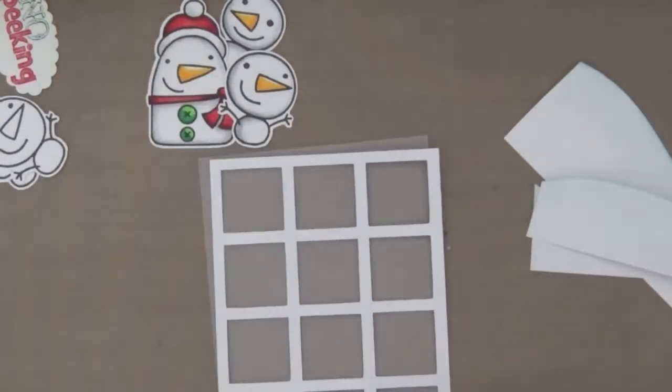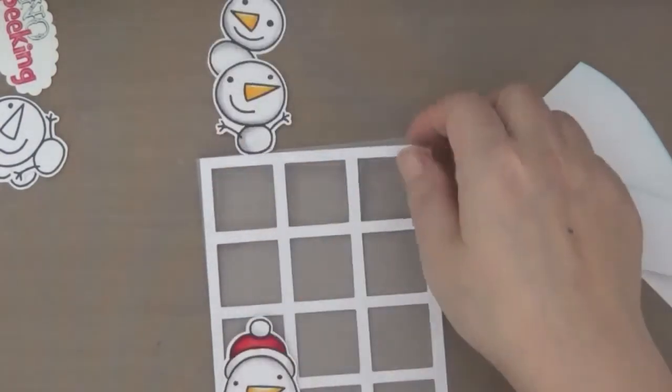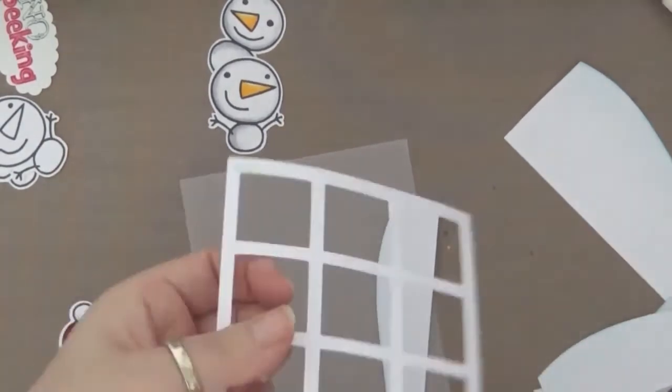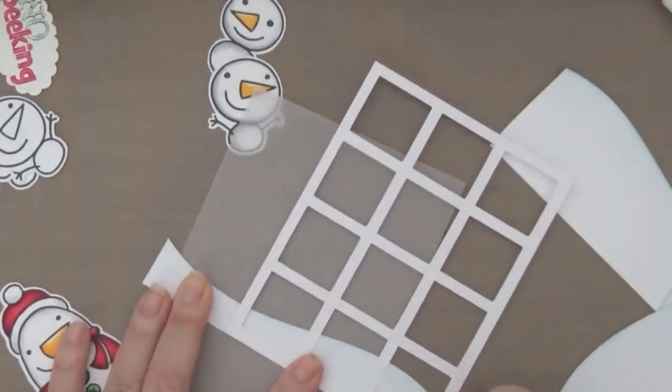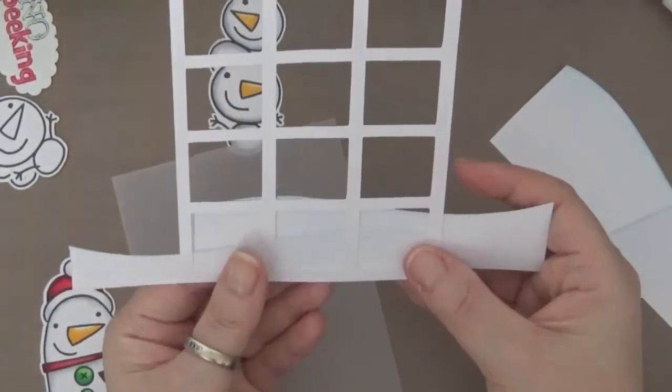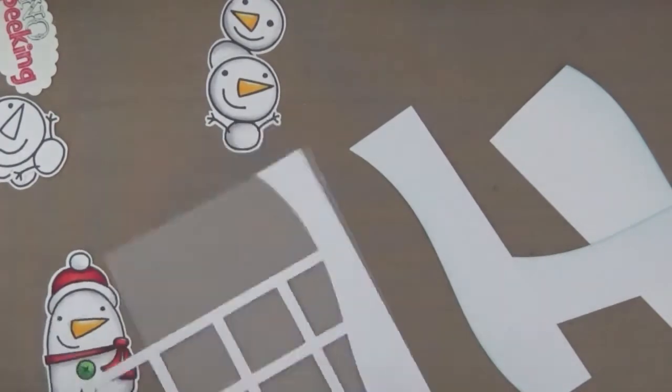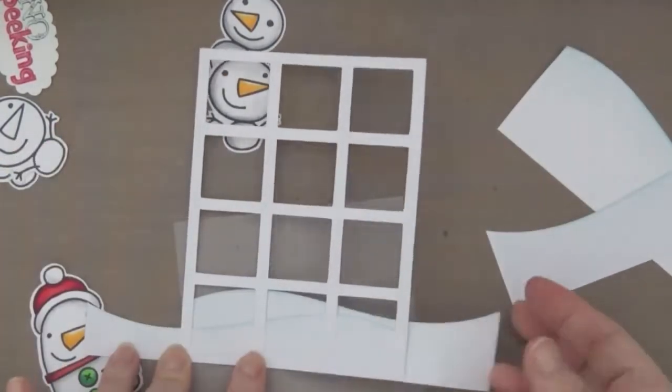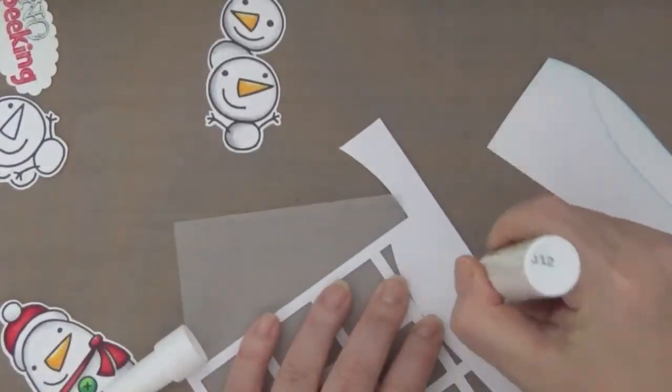So now that that's done, I have this My Favorite Things square grid panel. And I'm using this as a window. So I'm attaching the snowbanks to this window. So sorry if you hear like crunching noises in the back. My dog is eating. And so I'm attaching all four.